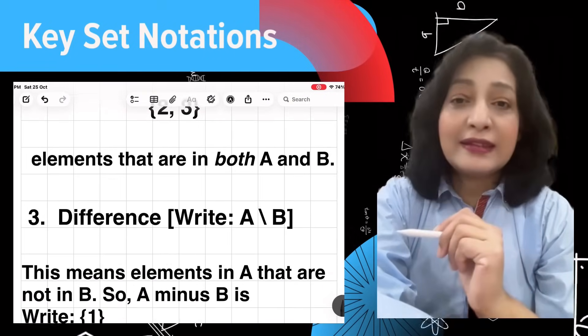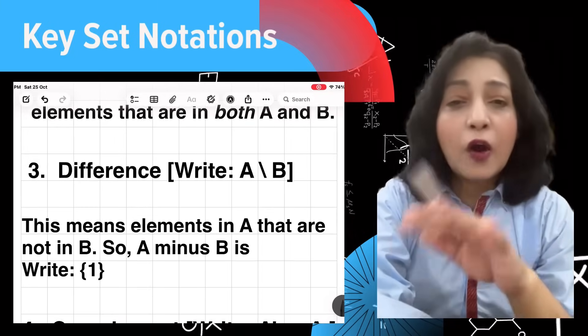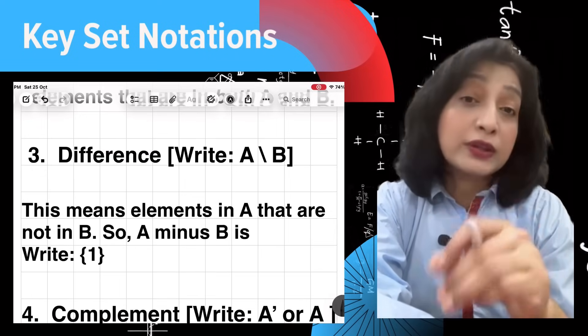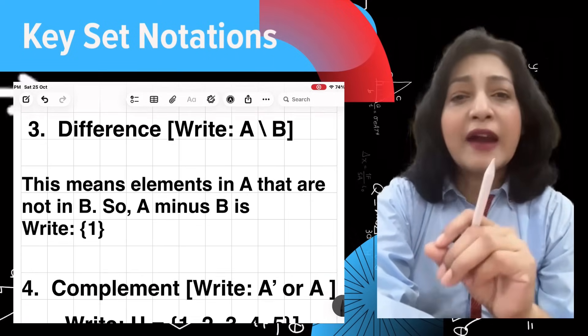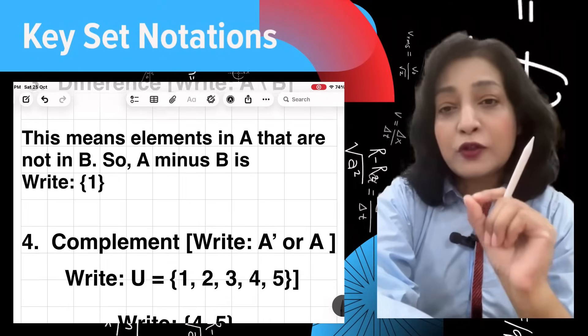Number two is intersection: A intersection B. This is the overlap, elements that are in both A and B. Here it is: {2, 3}, because 2 and 3 are common to both.